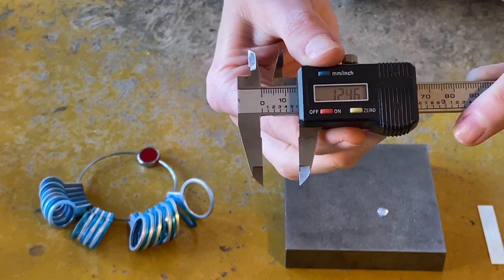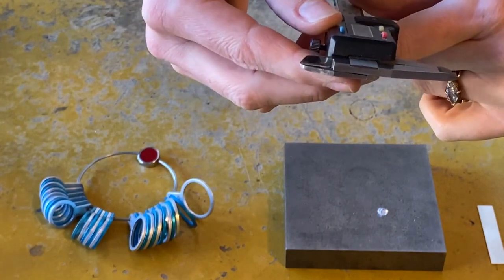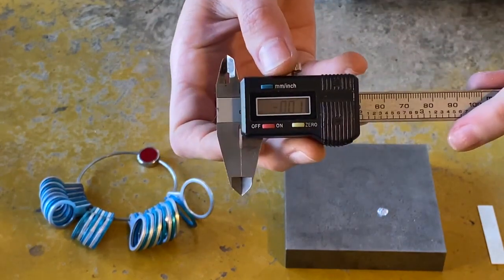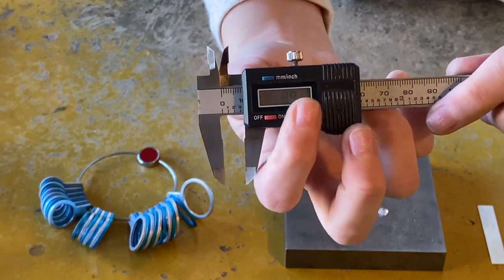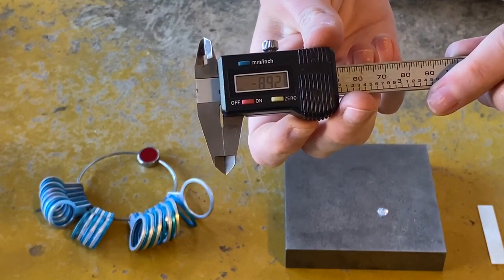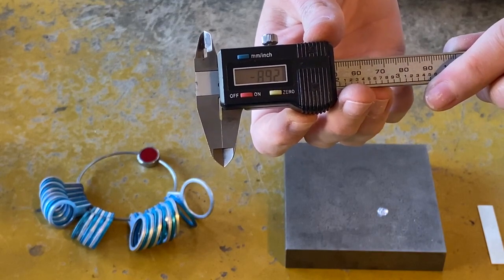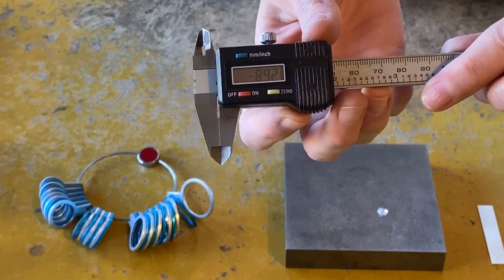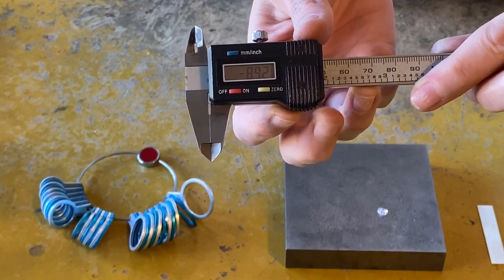It's also easy to accidentally zero them out when they're open and then get an inaccurate reading or the wrong ring size if you don't realize the mistake you've made. But after you've made that mistake maybe once or twice, you're not likely to make it again and you'll be double checking your work.